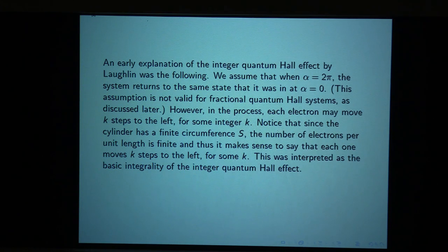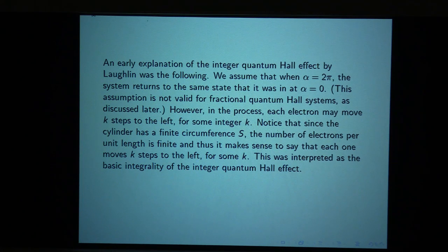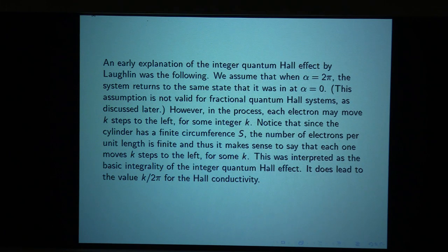This was interpreted as the basic integrality of the quantum Hall effect. The quantum Hall coefficient has to be such that by the time alpha is 2 pi, each electron will have moved an integer number of steps to the left if the system is to return to its original state. A small calculation shows this leads to the Hall conductivity of k over 2 pi.